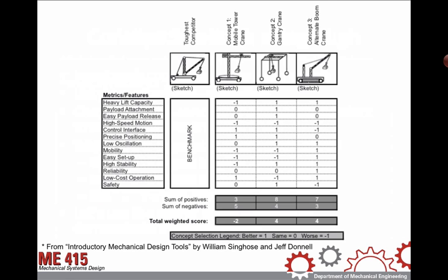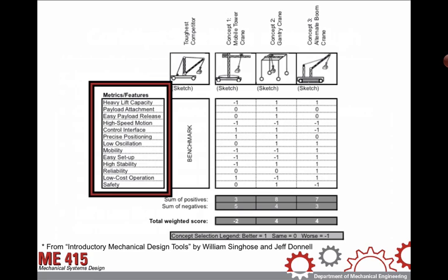Let's look at a particular example. In this case, we're looking at cherry pickers. The features we want to embed in our design include heavy lift capacity, payload attachment mechanism, easy payload release, high speed motion, and so forth down the list, clear down to safety at the very end.